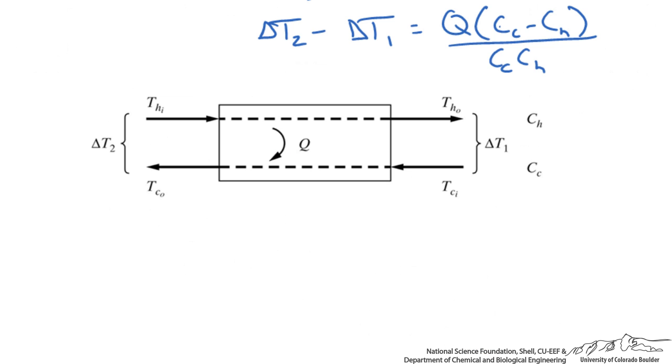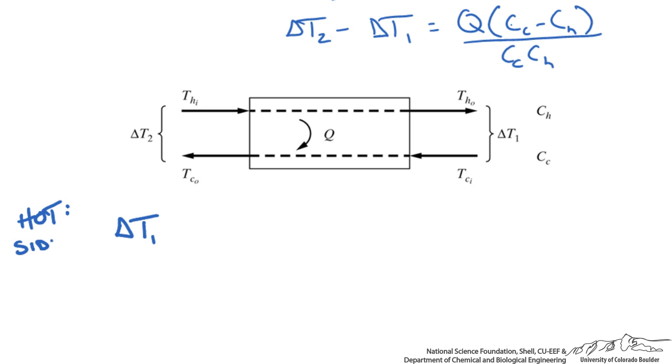When designing our two heat exchanger networks, one on the hot side and one on the cold side at the pinch point, we use this equation. If we are designing on the hot side of the pinch, delta T1 is going to be our designated minimum approach temperature, leaving us with delta T2 equaling delta Tmin plus the value on the right side.